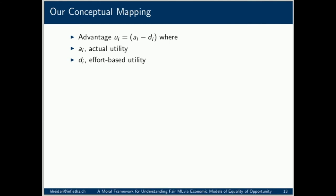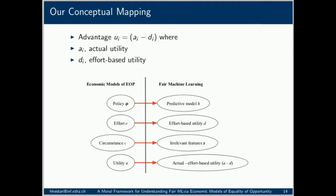Now let's draw a formal connection between recently proposed notions of group fairness for supervised learning and economic models of EOP. Observe that in practice, predictive models inevitably make mistakes — sometimes beneficial and sometimes harmful to the subject. We posit that EOP would require individuals who are similar in terms of what they can be held accountable for to have the same prospect of receiving advantage or disadvantage, irrespective of their irrelevant characteristics. Our main conceptual contribution is to map the supervised learning setting to economic models of EOP by treating predictive models as policies, irrelevant features as circumstance, and effort-based utilities as effort.